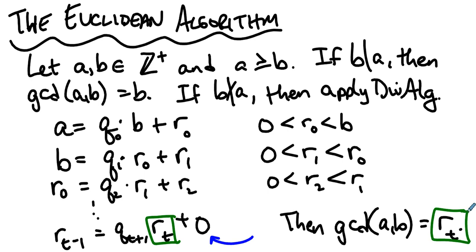The greatest common divisor of a and b is r-sub-t. Why? Because the greatest common divisor of a and b is the greatest common divisor of b and r-sub-zero, which is the greatest common divisor of r-sub-zero and r-sub-one, and so on down the chain. Because r-sub-t divides r-sub-(t-1), it is the greatest common divisor of those two numbers. We apply the lemma over and over again — it must work.